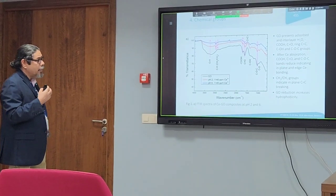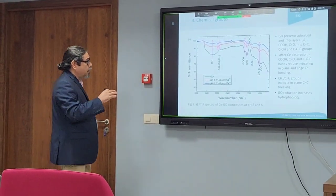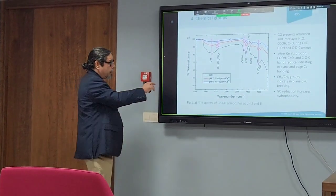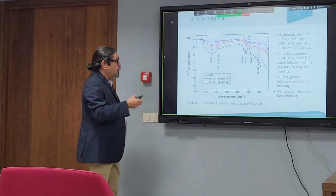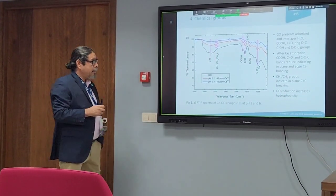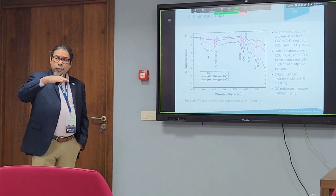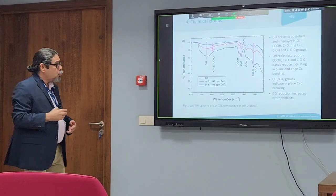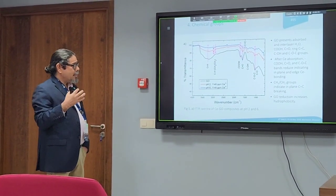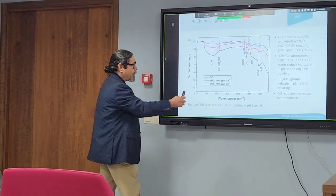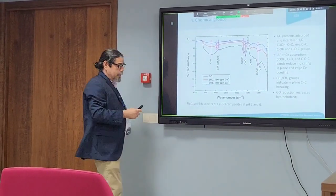In the FTIR, graphene oxide seems to absorb the cerium. It's getting reduced because we can see the formation of methylene moieties, so that indicates the graphene is breaking the double bonds. And also that cerium is getting absorbed in the carbonyl and carboxyl moieties.